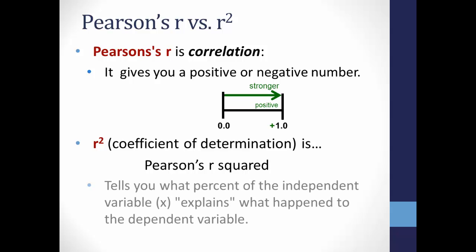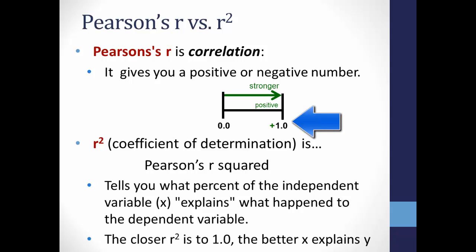This tells you what percent of the independent variable, say hours of studying, explains what happens to the dependent variable, such as exam score. The closer R-squared is to 1, the better the prediction. In other words, the better x explains what happens to y.